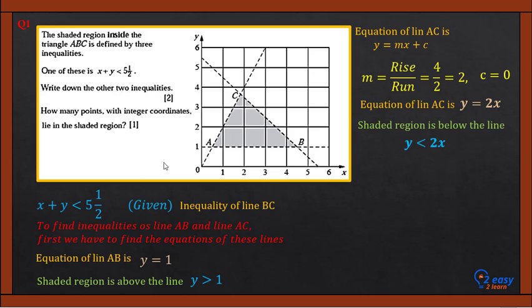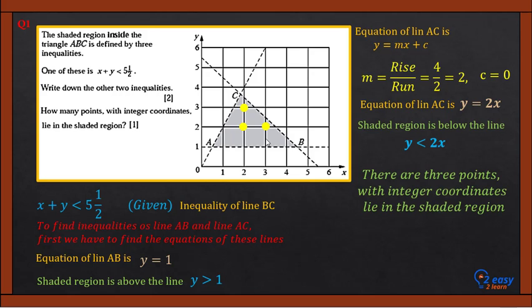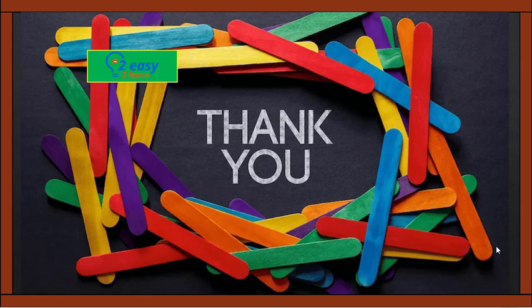How many points with integer coordinates lie in the shaded region? Integer coordinates mean the coordinates must not be decimals or fractions. Observing the region, the points are (2, 3), (2, 2), and (3, 2) — so there are 3 points with integer coordinates in the shaded region. Thanks for watching this video lesson. See you in the next lesson.